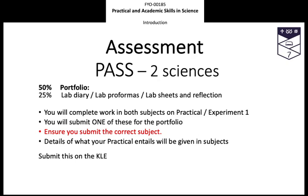You'll only complete one lab diary, lab proforma or lab sheets, and it will be based on experiment one — the experiment you do at the beginning of the course. For those doing two science subjects, you will do an experiment one in each of those subjects, but you will only submit one of those for assessment. There'll be an opportunity for you to do some peer or self-assessment to get feedback on the other one that isn't submitted. You're still expected to complete both experiments because you're going on to do a degree in both subjects — you will need to learn all of those skills — but you can only submit one for assessment.